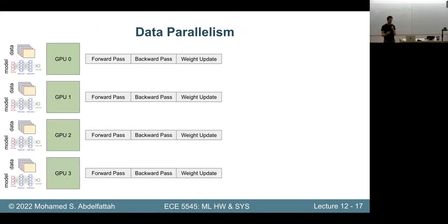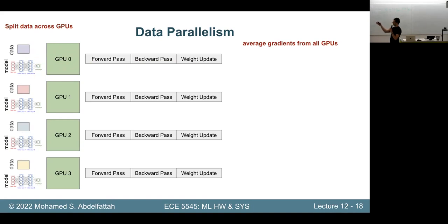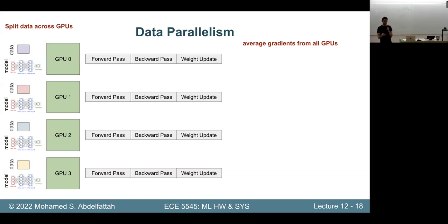If I have multiple GPUs, I want to split the data across them — that's why it's called data parallelism. I take my mini-batch and put a quarter of it on each GPU. But I can't just independently compute the forward pass, backward pass, and weight update for each GPU separately. The mini-batch works by averaging the loss over all the different inputs, so I need to aggregate and average the gradients before the weight update to capture information from the entire mini-batch.